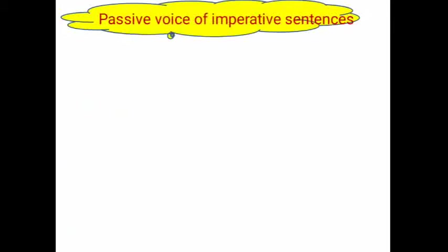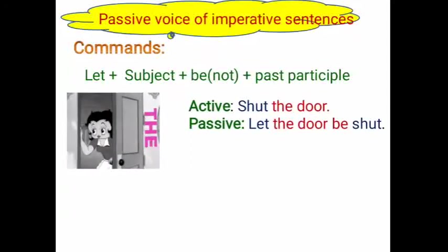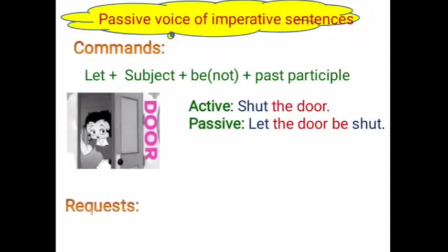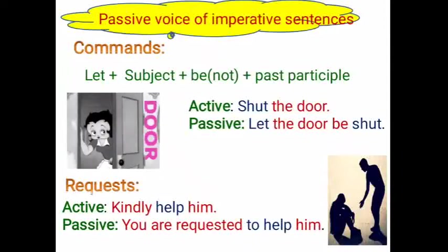Passive voice of imperative sentences: when we talk about commands, requests, or orders, we use 'let + subject + be + past participle'. If it's a negative sentence, 'not' is added. For example, in active voice: 'Shut the door' becomes 'Let the door be shut' in passive voice. For requests, 'Kindly help me' changes to 'You are requested to help him' — the word 'requested' is used in passive voice.